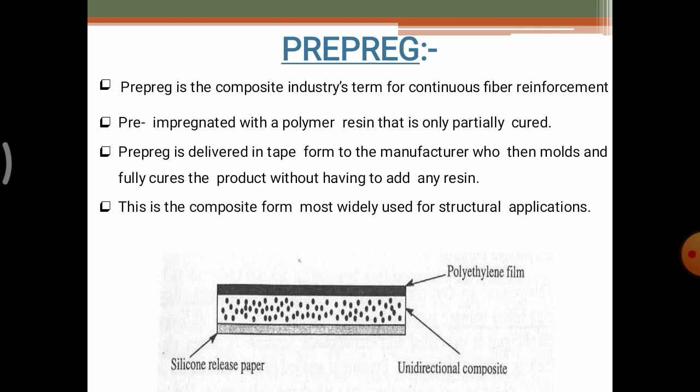This composite form is mostly and widely used for structural applications — in lamina composites, concrete layers, or different methods. There you can see the tape form of a prepreg, showing three types of layers. The first one is the polyethylene film, seen in dark black color; the second one is the unidirectional composite in the middle lamina; and the third one is the silicon release paper. These are the three types of laminae used in the prepreg. This is one example — not all materials are used in this form only.